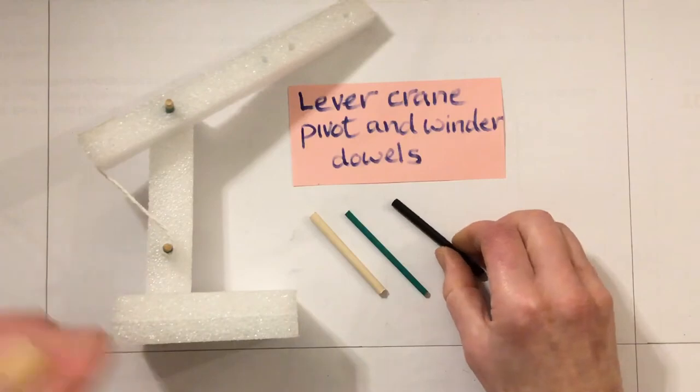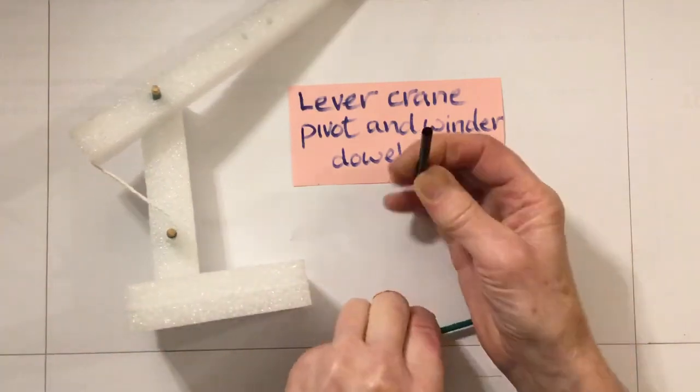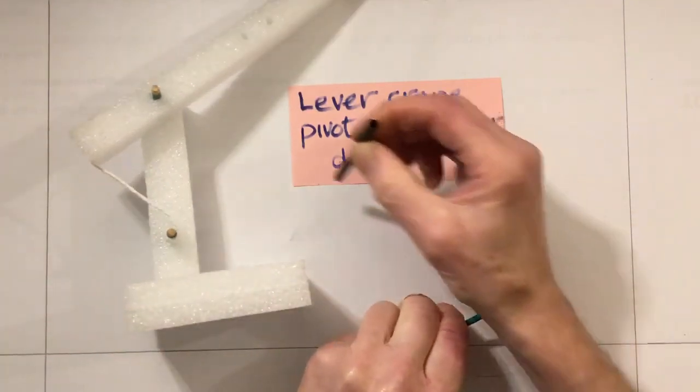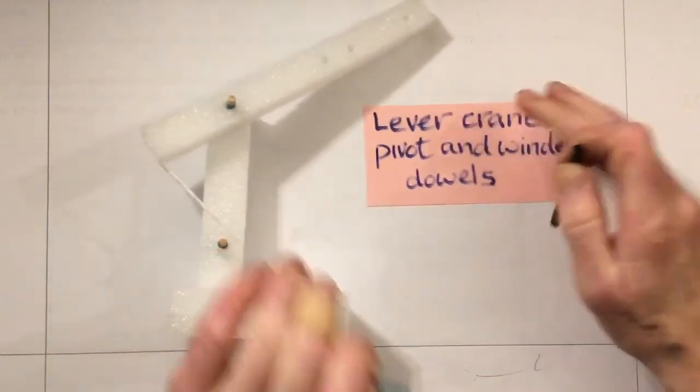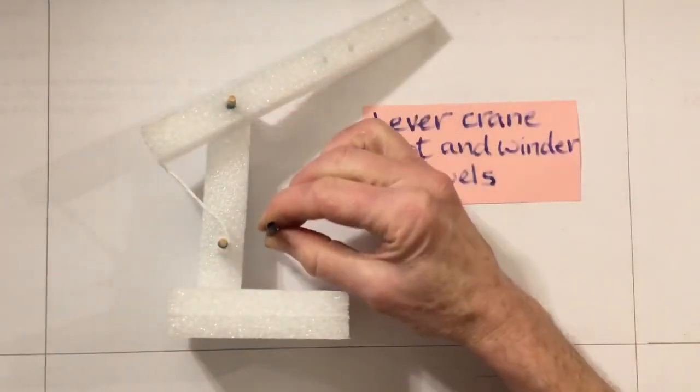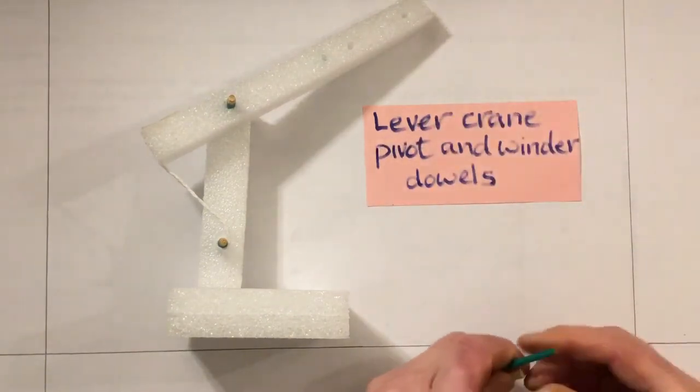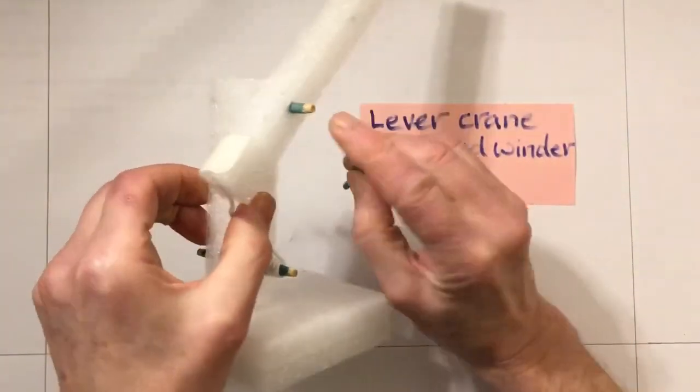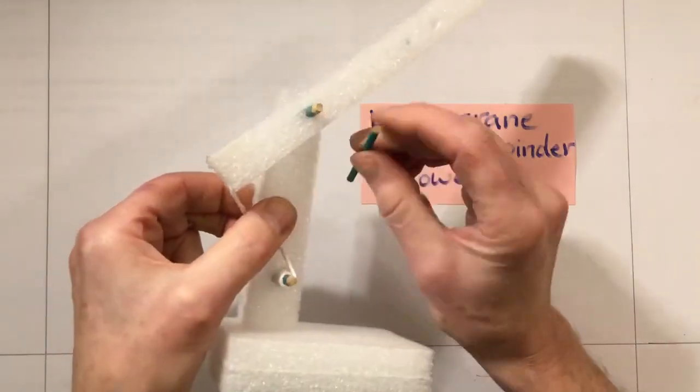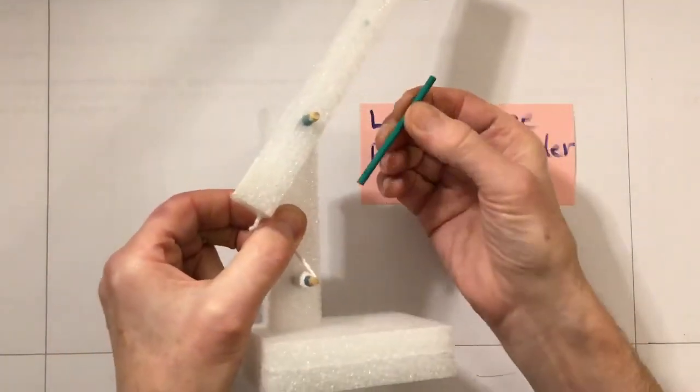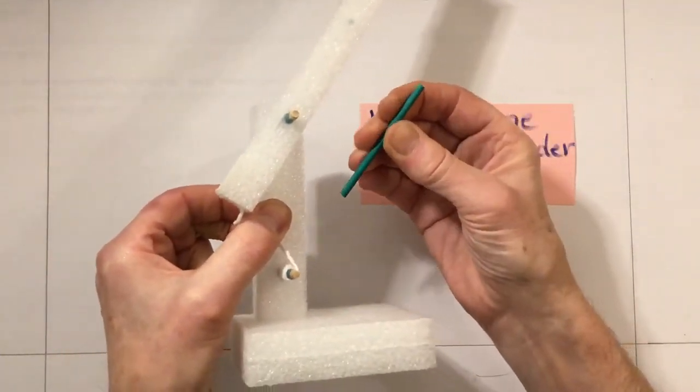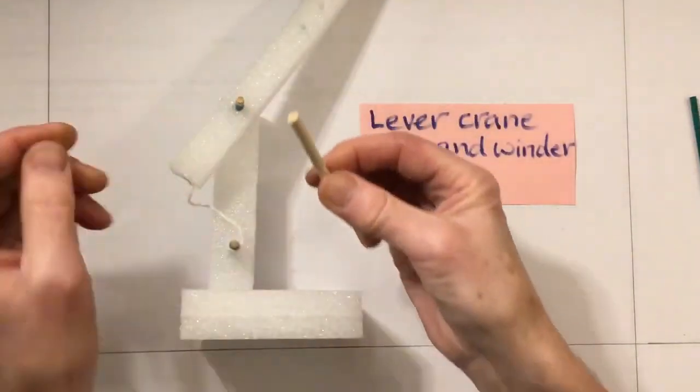There are lots of different types of rods we could use. We could even use plastic straws - they could take the place of the wooden ones in my model here. These rods are quite thick. We could have used thinner ones, and these ones are all painted green, or we could use ordinary wooden rods.